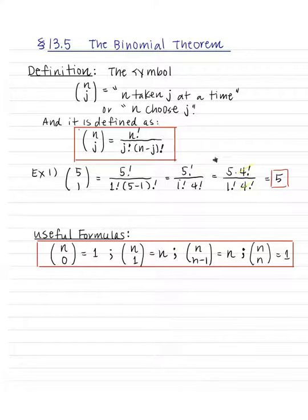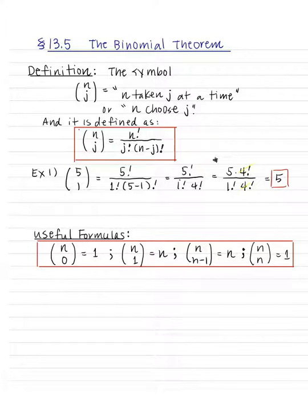For example, if I have 5 choose 1, by definition that's going to equal 5 factorial all over 1 factorial times 5 minus 1, which is 4 factorial. Expand the bigger factorial until you reach the smaller factorial — expand 5 factorial until you reach 4 factorial — so you can cancel out the 4 factorials from numerator and denominator. Your answer is going to be 5.